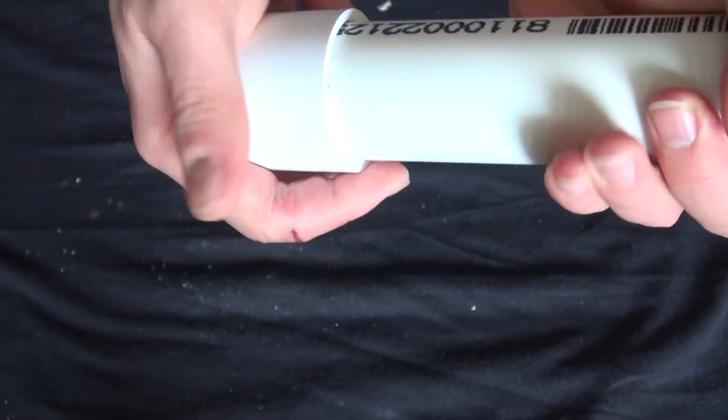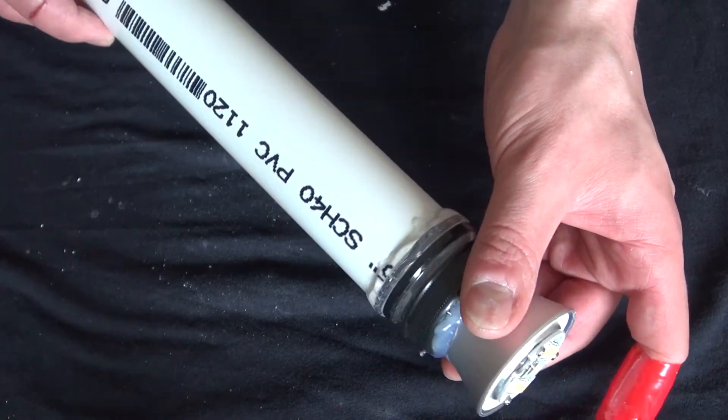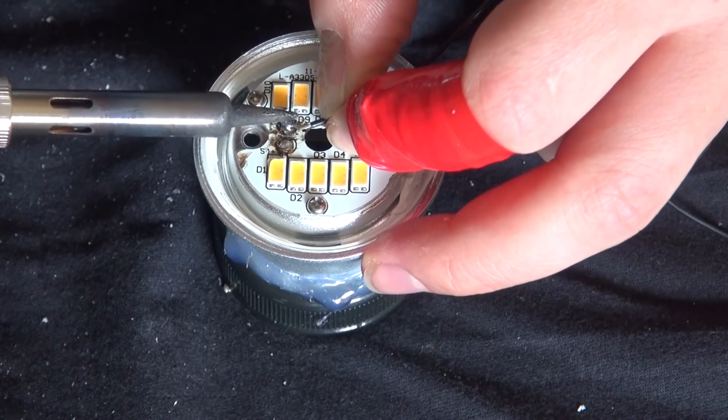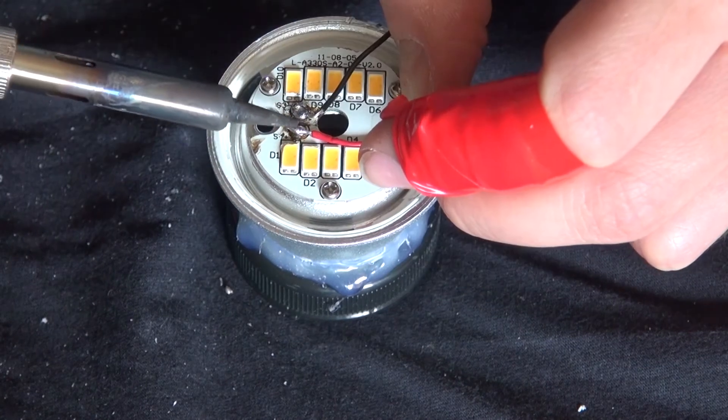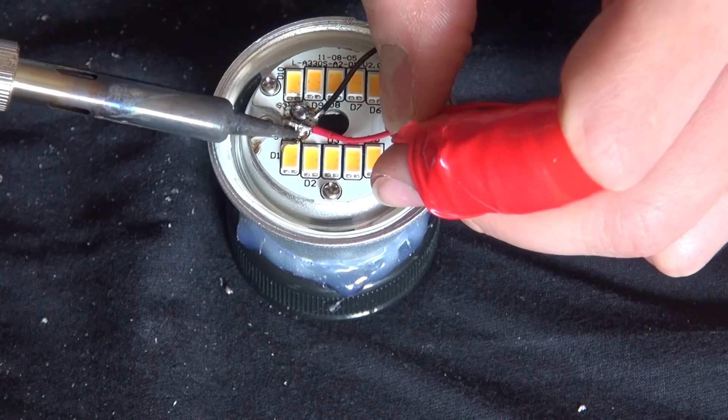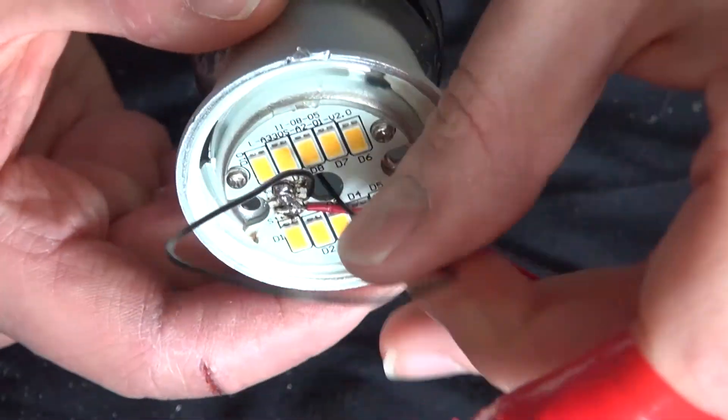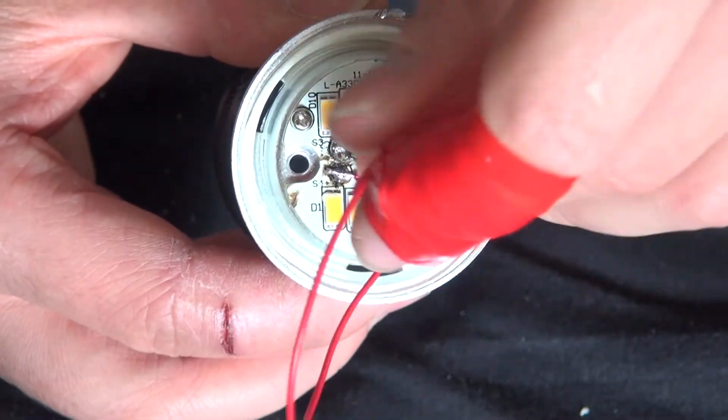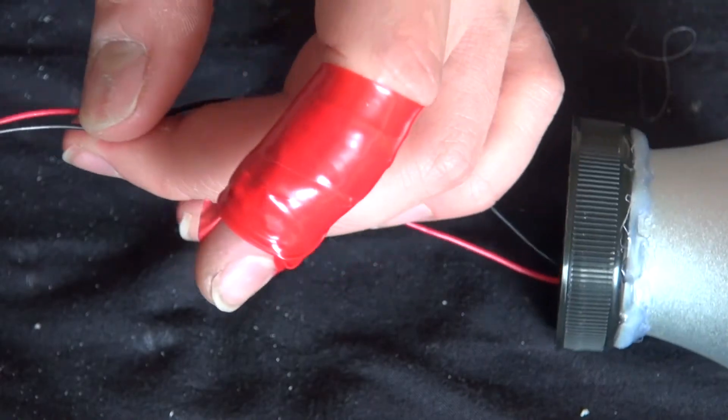Now the next step is to put the bottom cap on to keep things sealed and secured and now you can just simply glue. Now I'm going to go and solder a negative wire to the negative spot of the LED and now I'm going to solder the positive wire to the positive part of the LED. Push the two wires through that little hole there.